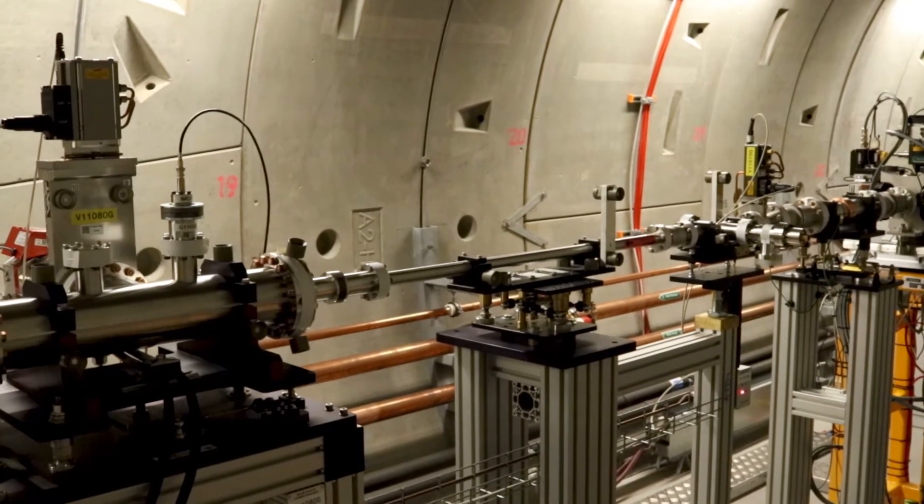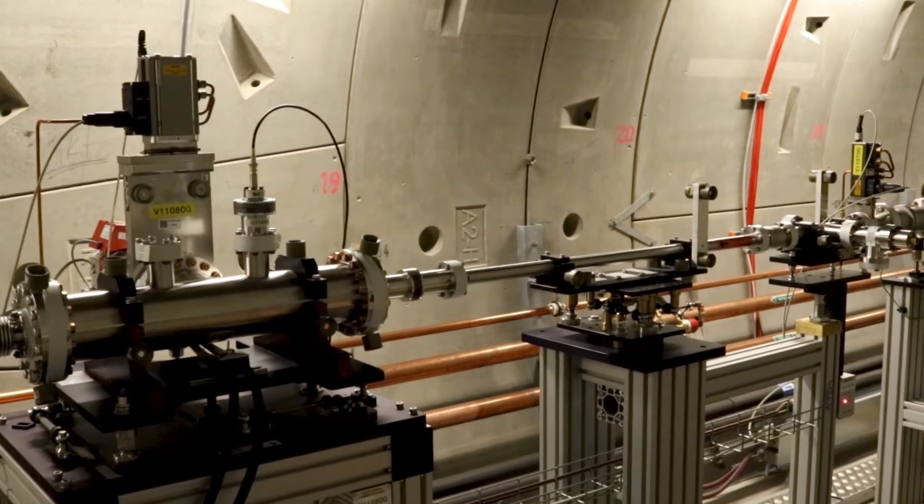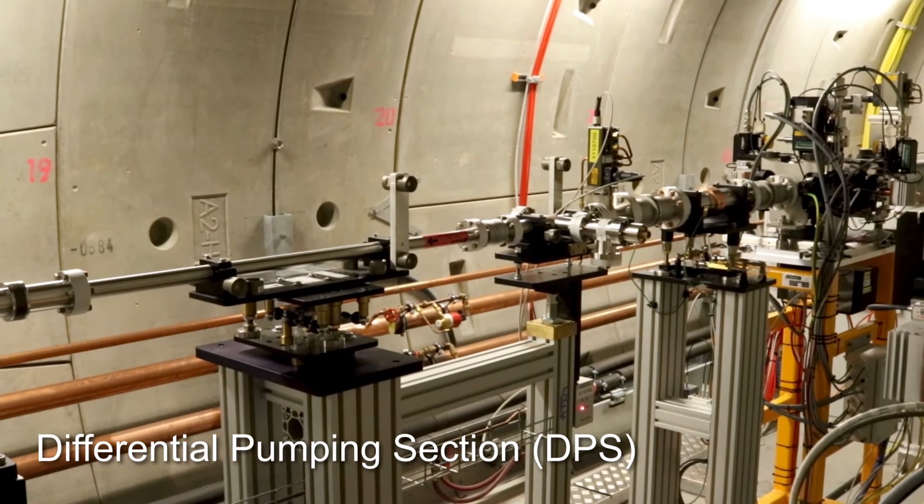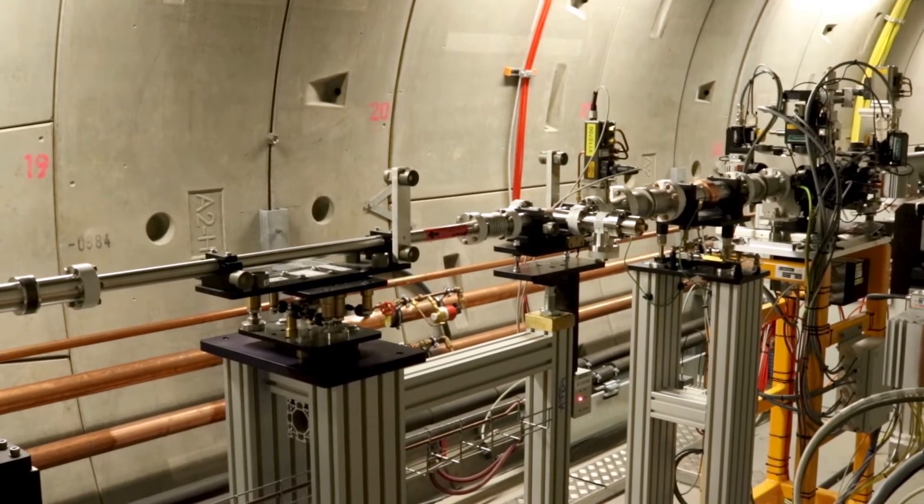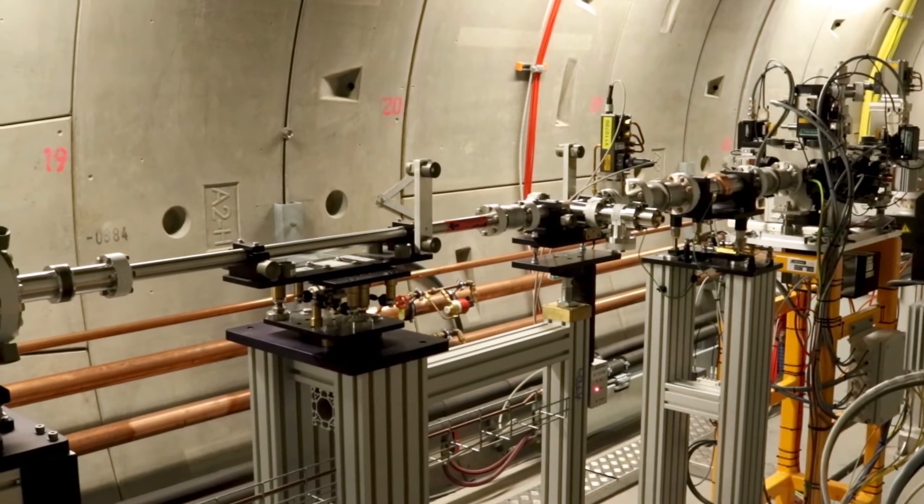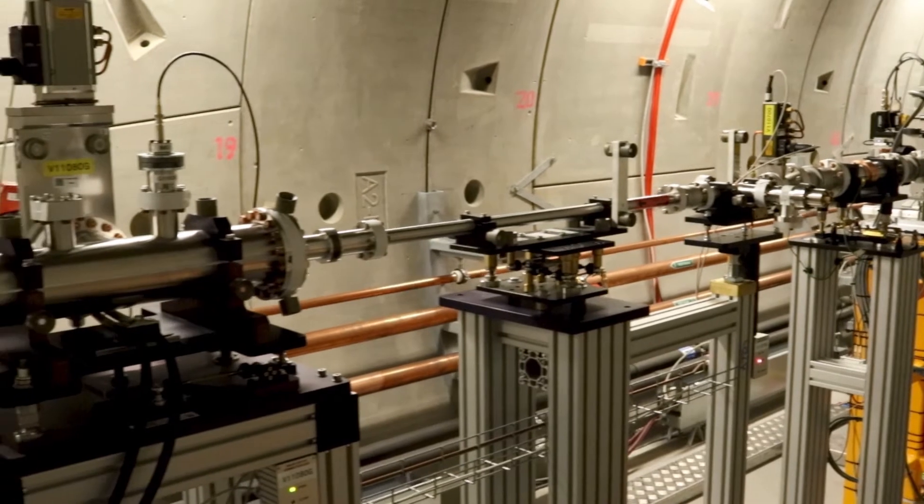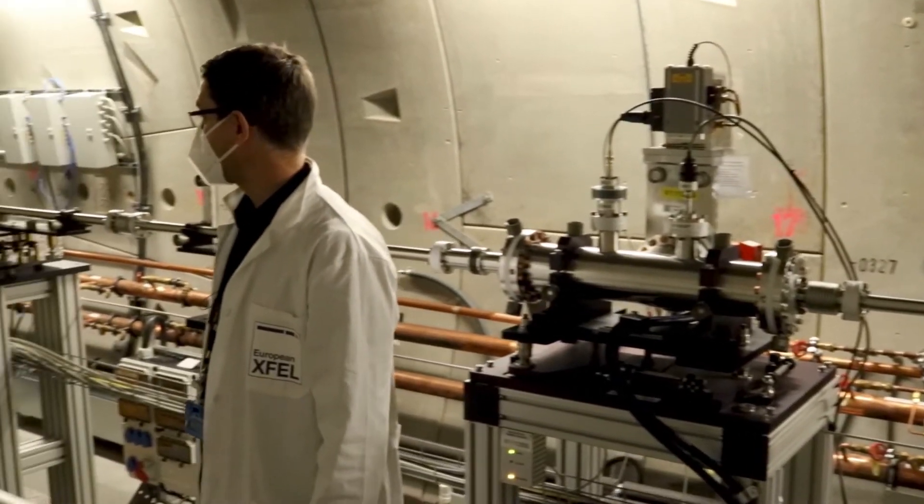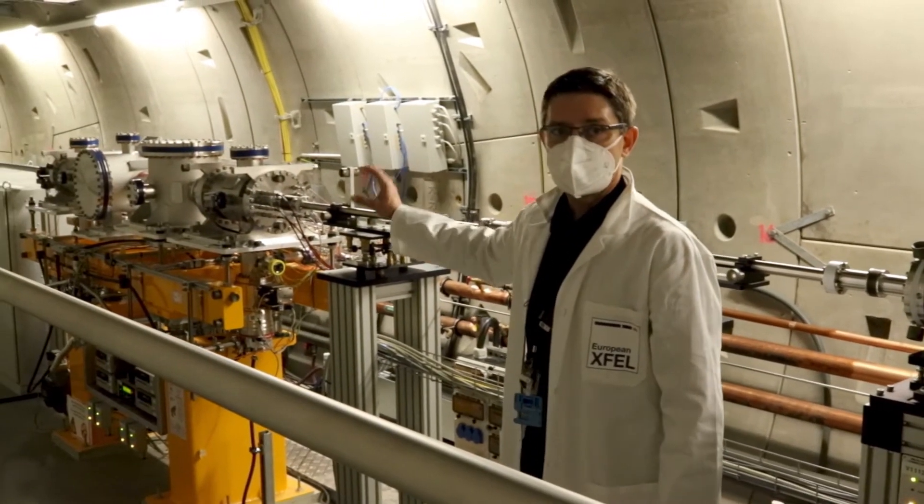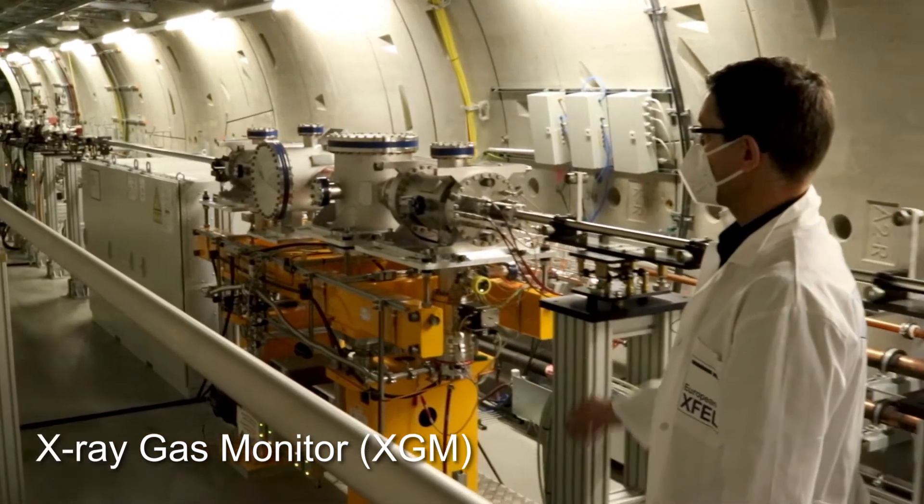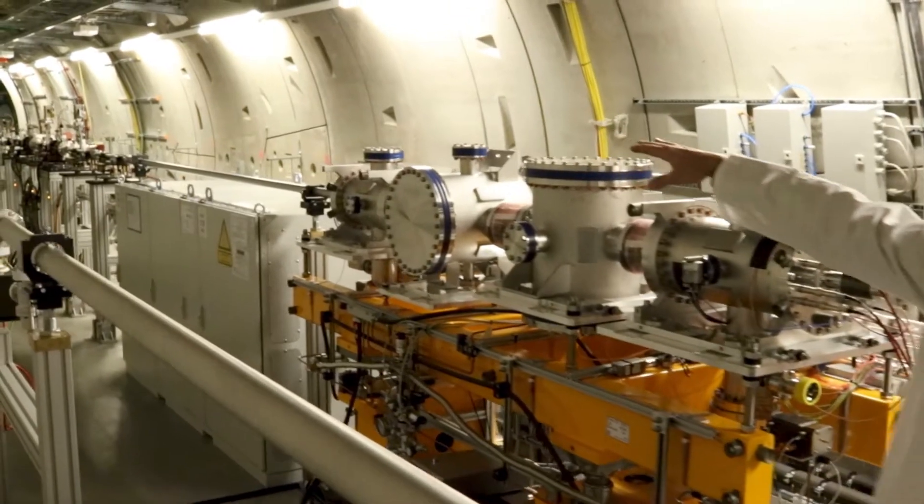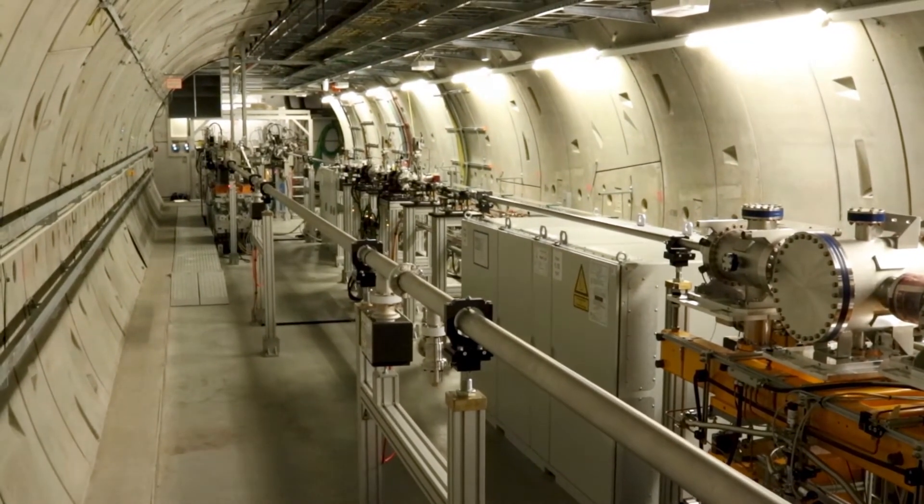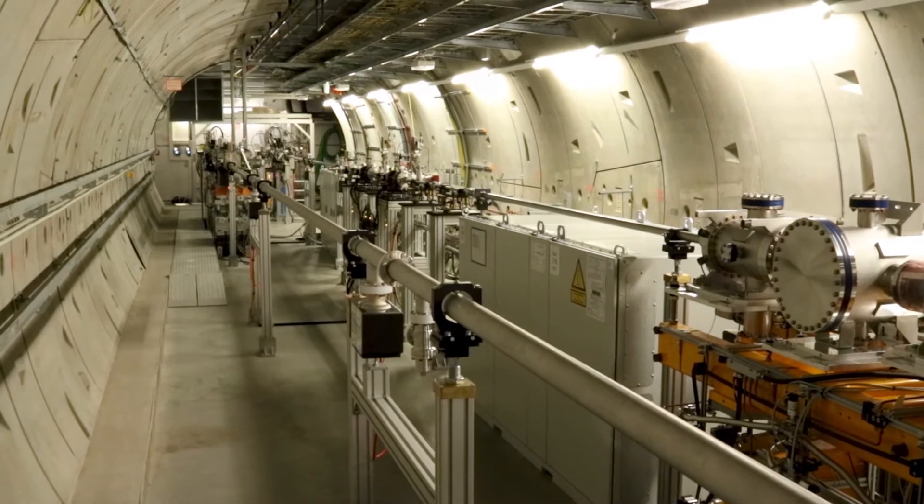This is another XGM in the beamline, X-ray gas monitor. We see first the start of the gas section with the differential pumping, which separates the X-ray gas monitor gas pressure from the beamline pressure. These are several chambers where the pressure is successively changed to the pressure of the target background gas which is used inside the XGM.